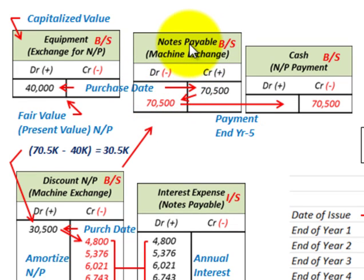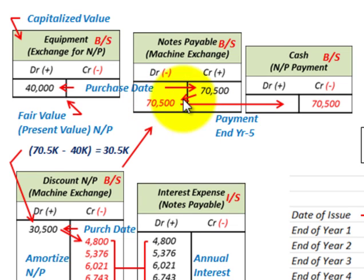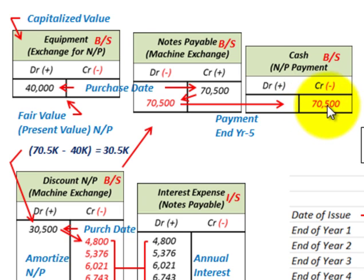When the note comes due, we had the seventy thousand five hundred dollar amount sitting on our notes payable at the purchase date. At the end of the fifth year, we debit notes payable to reduce it to zero and credit cash for seventy thousand five hundred dollars — reducing our cash balance on the balance sheet.